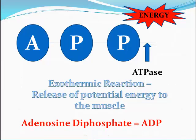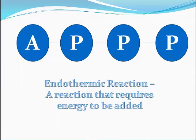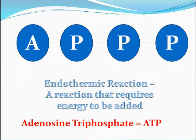This leaves behind a compound called adenosine diphosphate or ADP. This ADP can't provide energy until it has been re-synthesised back into ATP. In order to re-synthesise ADP back into ATP, additional energy is required to add the phosphate back, which we can see on the screen. In doing this, this is called an endothermic reaction — a chemical reaction that requires energy to be added in order for it to progress. And this gives us adenosine triphosphate or ATP again.